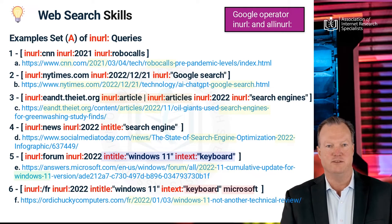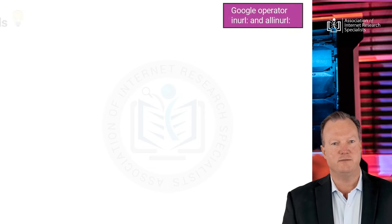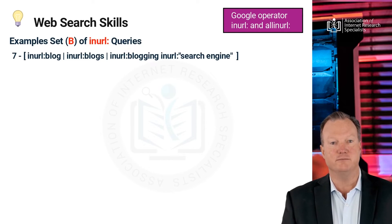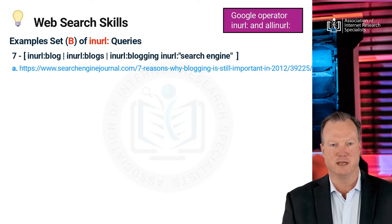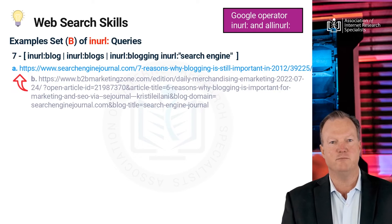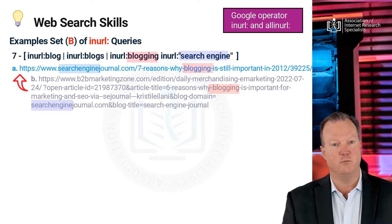These were some of the queries for practice and use of inURL. Next, we will use example set B to further your knowledge of using this command. In example set B, query 7, the word blog, or its plural word blogs, or blogging, is an acceptable return, while the term search engine is a mandatory find. Running the search brought back a page with a link shown as A. Just below the link, you can observe a lengthier link B. This is the original link programmed for the page, but it is masked by the Google recommended link structure A. When the search uses inURL, it seeks a match of words in both the original source link B and masking link A appearing in the snippet. In both links, the word blogging is matched along with the word search engine.